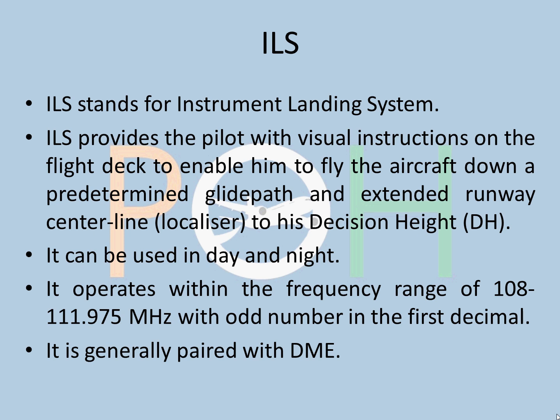The ILS can be used both day and night. It operates within the frequency range of 108.0 to 111.975 MHz with odd number in the first decimal. I'll come to that in a while. It is generally paired with the DME, which is Distance Measuring Equipment. It will give us the distance to touchdown, distance from the ILS antenna.